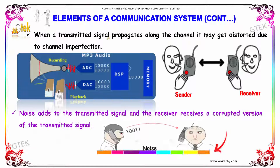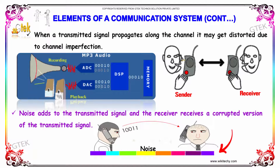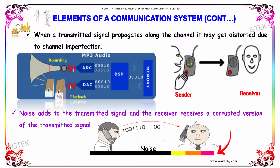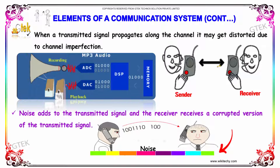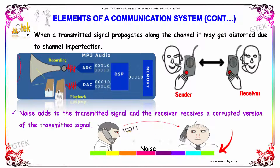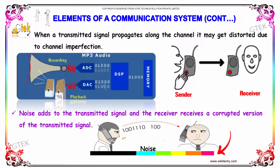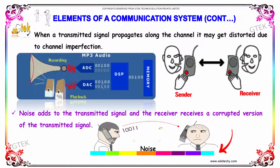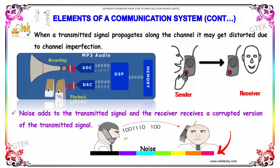When a transmitted signal propagates along the channel, it may get distorted due to channel imperfection. Noise adds to the transmitted signal and the receiver receives a corrupted version of the transmitted signal.